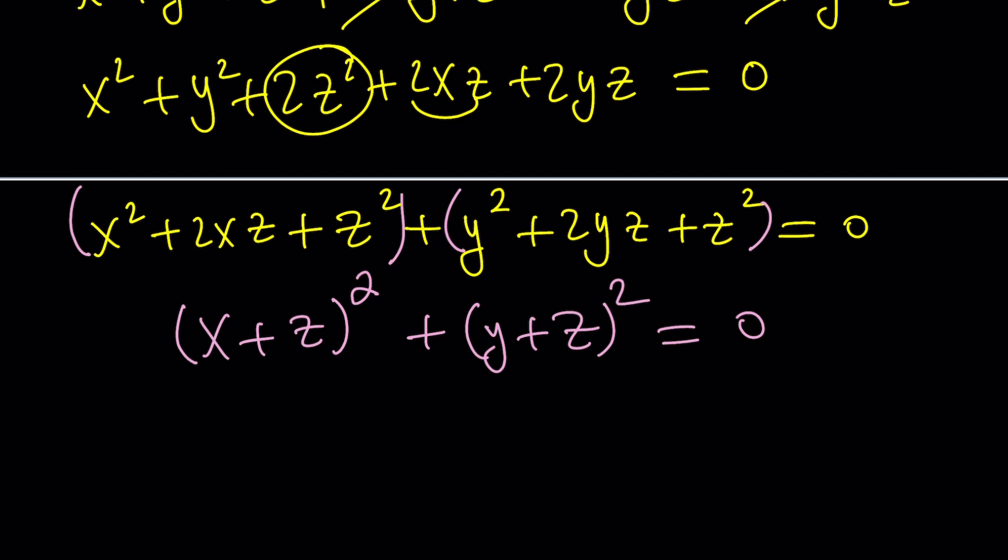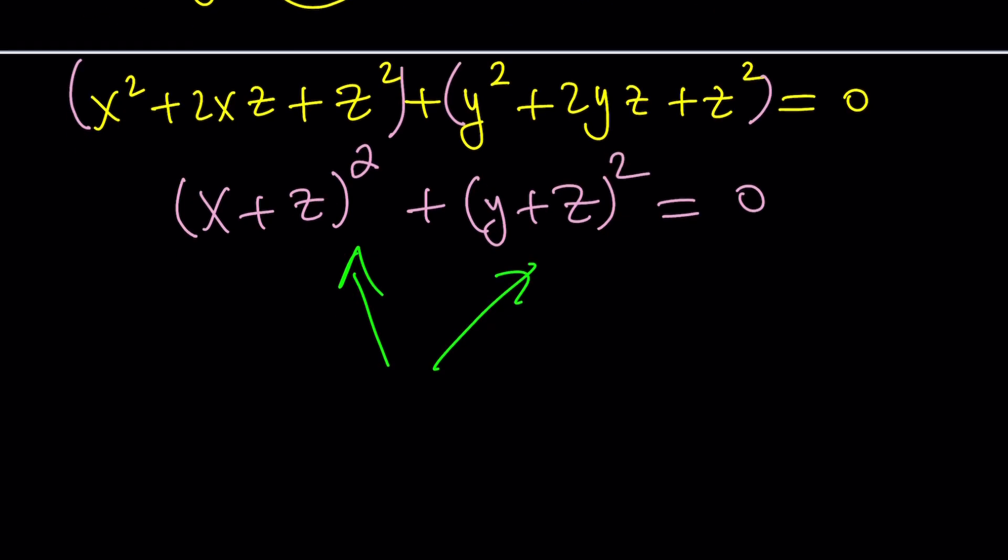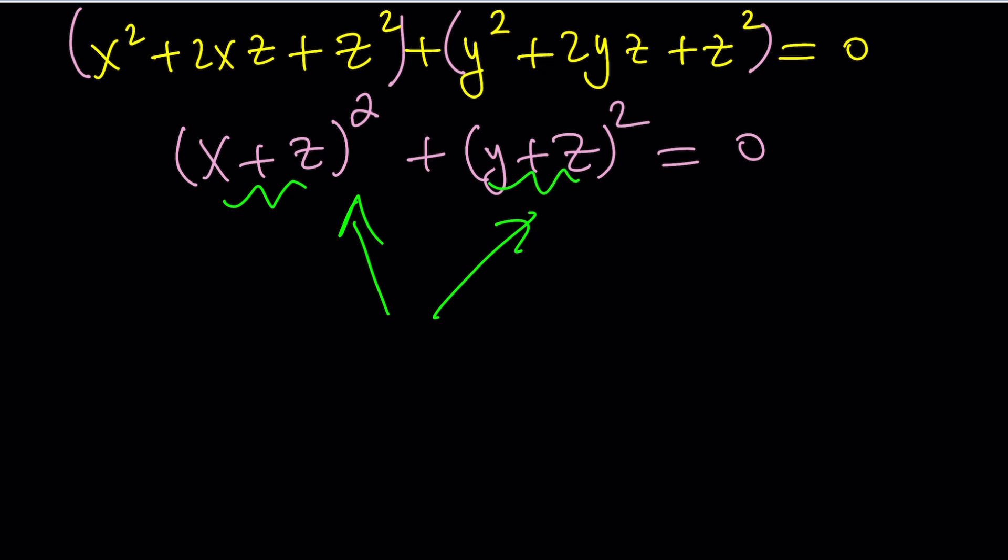Well, if x, y, z are real, x plus z and y plus z are real. If you add two real numbers squared, then you can only get a zero if each number is zero. In other words, you can get a zero by adding two zeros or by adding a positive and negative. But these expressions cannot be negative if x, y, z are real. So they both have to be zero. That's the only conclusion we can get from here.